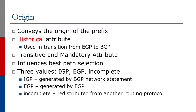It has three values and these three values are called IGP, EGP, and incomplete. In this case, IGP means that the prefix has actually been originated by BGP itself. It doesn't mean OSPF or IS-IS — it means the prefix has come from BGP itself, so injected into the local AS's BGP, usually by a BGP network statement.